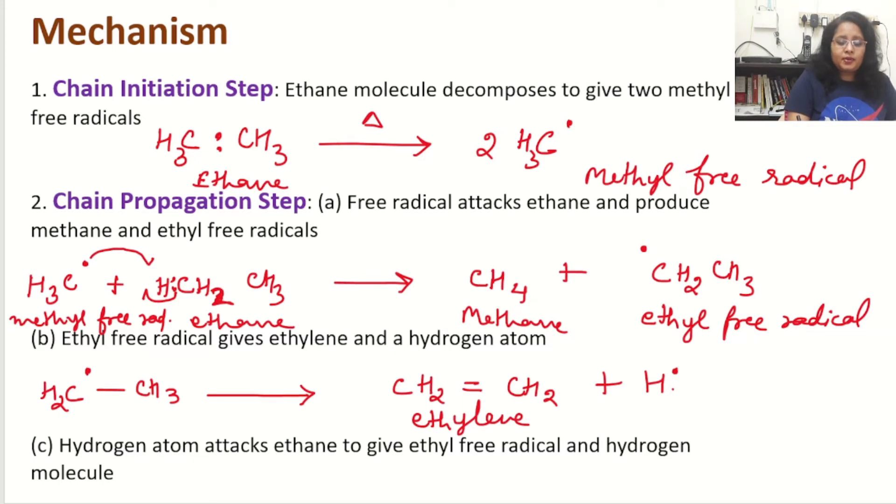In part (c), hydrogen atom which is formed in the earlier part attacks the ethane to give ethyl free radical and hydrogen molecules. Here I am showing the hydrogen atom which attacks the ethane that we used in the first step, CH2HCH3.